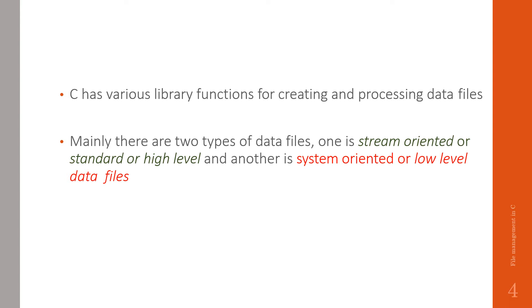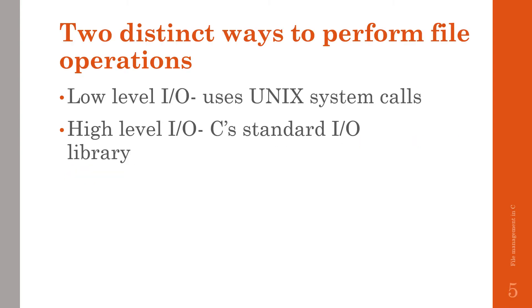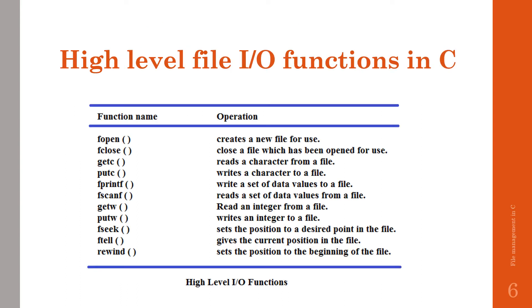There are mainly two types of data files. One is stream-oriented, also called standard or high-level. The other is system-oriented, or low-level data files. There are two distinct ways to perform file operations: low-level IO using system calls, and high-level input-output using the C standard IO library.